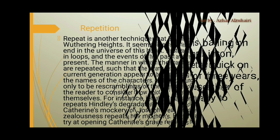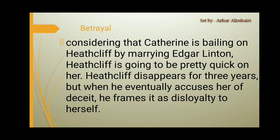Another important theme is betrayal. Catherine betrays Heathcliff by marrying Edgar Linton, and Heathcliff is deeply affected by this. He disappears for three years, but when he eventually accuses her of deceit, he frames it as a disloyalty to herself. On the other hand, when he returns, Catherine feels he betrayed her by choosing to be with Isabella. So betrayal operates in both directions.